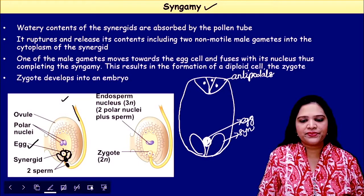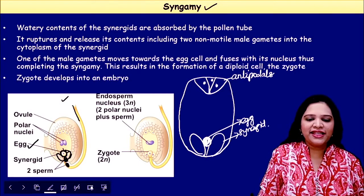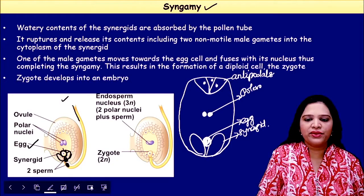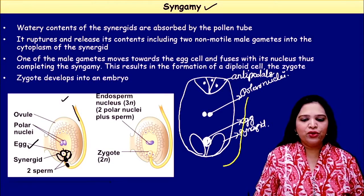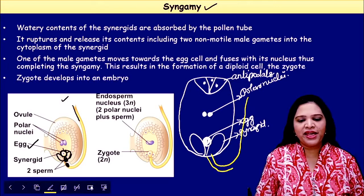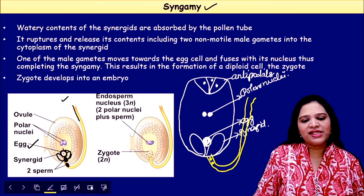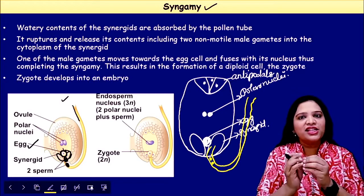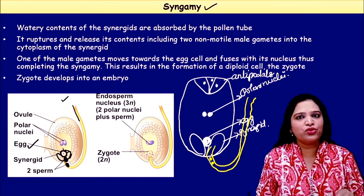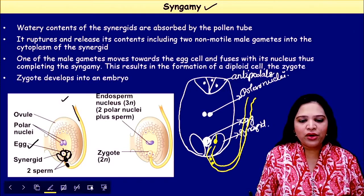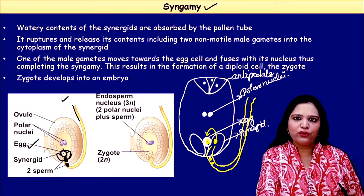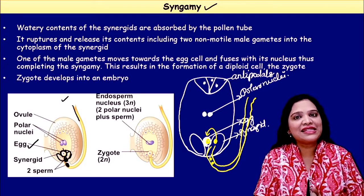This is the synergid. In the center are two nuclei — the polar nuclei. The pollen tube is bringing two male gametes. Once the pollen tube enters via the synergid it ruptures and releases the two male gametes. The first male gamete goes and fuses with the egg cell, resulting in zygote formation — this is exactly called syngamy.